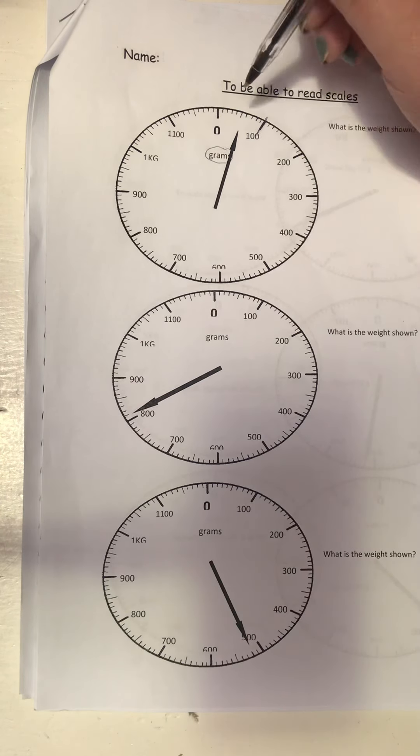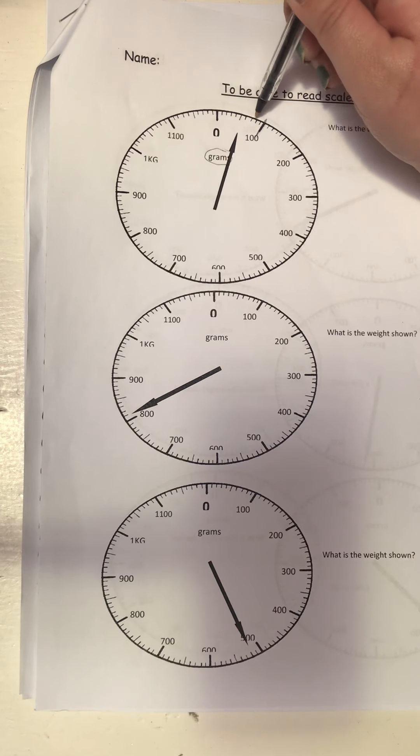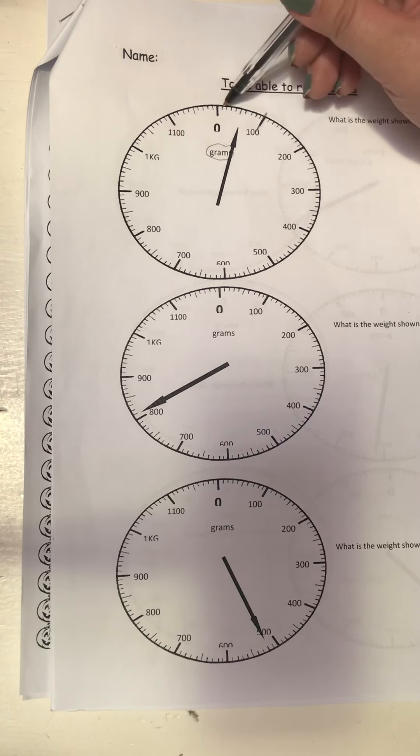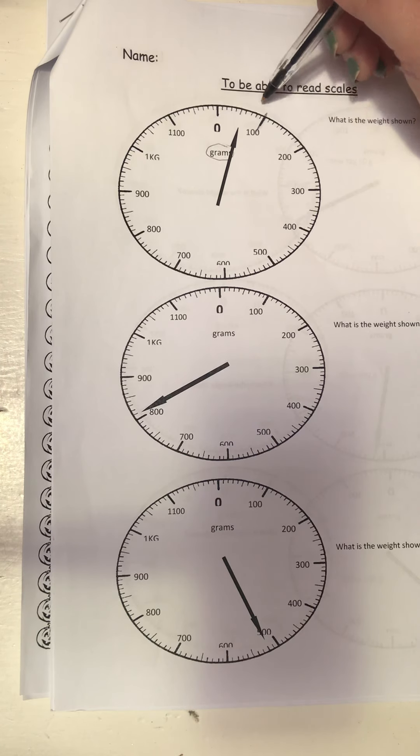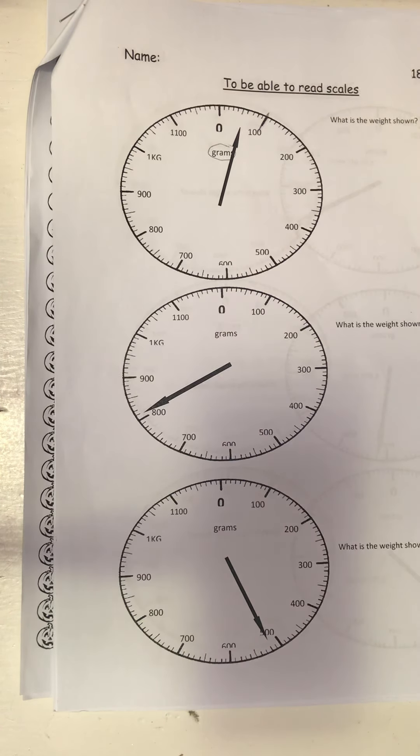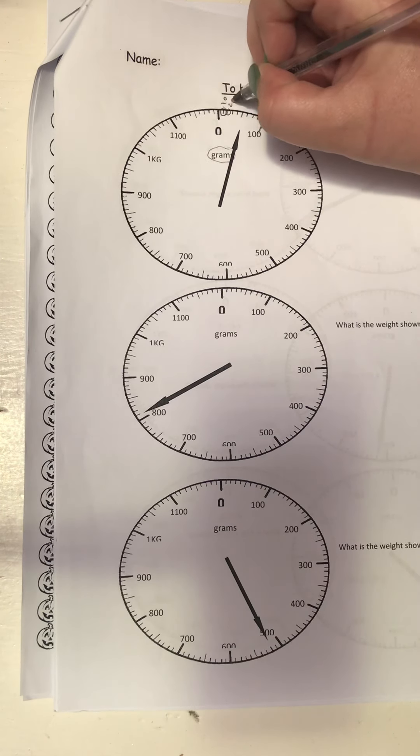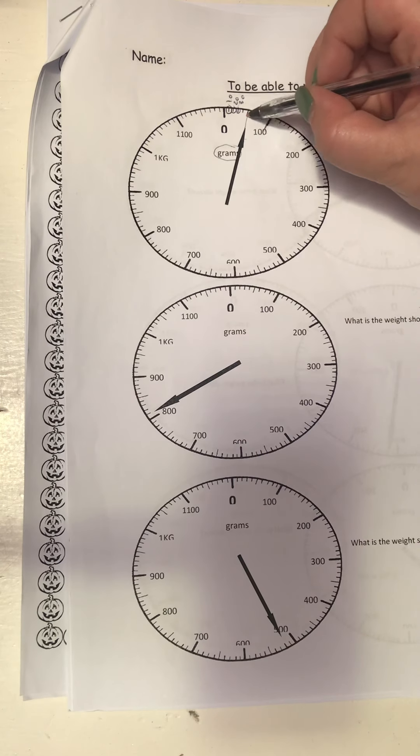2, 4, 6, 8, 10, 12, 14, 16, 18, 100. Nope, does not make sense. Let's try counting in fives. 5, 10, 15, 20, 25, 30, 35, 40, 45, 100. Nope, doesn't make sense. Let's try counting in tens. 10, 20, 30, 40, 50, 60, 70, 80, 90, 100. Perfect! So now we know that each one of these little lines represent 10.